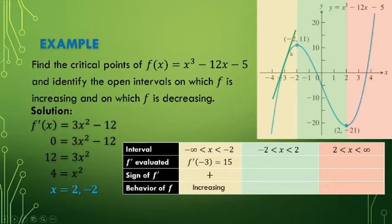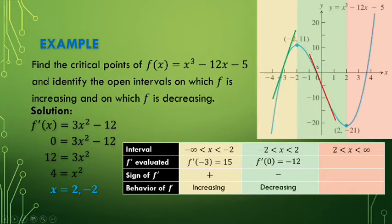Then from the value closest to 2, f'(3) = positive 15, which is positive — and at this interval, the graph is increasing. So f'(x) > 0 gives increasing behavior, and f'(x) < 0 gives decreasing behavior.